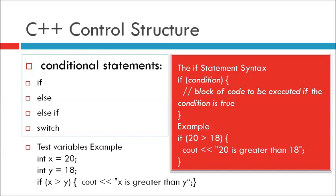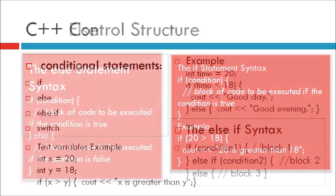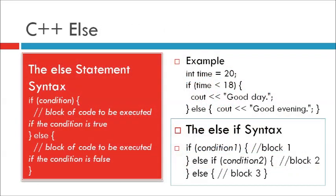C++ else statement. Use the else statement to specify a block of code to be executed if the condition is false. Syntax: if (condition) { block of code if true } else { block of code if false }. For example: integer time = 20; if (time < 18) { cout << 'Good day'; } else { cout << 'Good evening'; }. In this example the output is 'Good evening' because time is not less than 18.